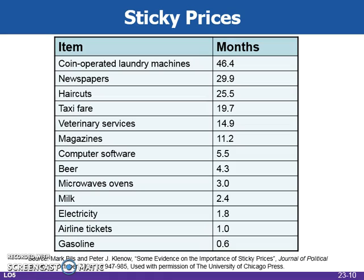Not all prices are sticky or slow to change. Many commodities such as corn, oil, and natural gas feature extremely flexible prices and can literally react in seconds to changes in supply and demand. Prices for final goods and services consumed by people tend to be quite sticky. The degree of stickiness can be measured by looking at the length of time between the change in the market and the price change in goods and services. This table illustrates the stickiness of some common goods and services.